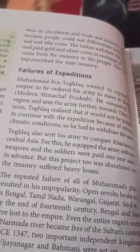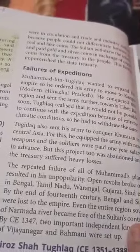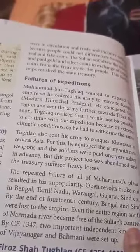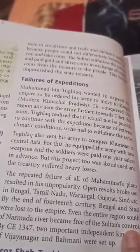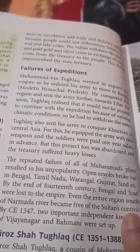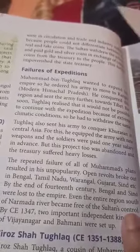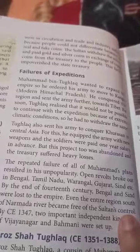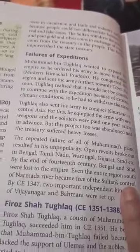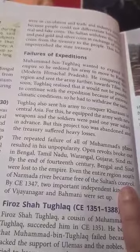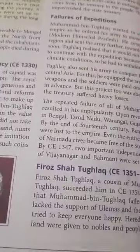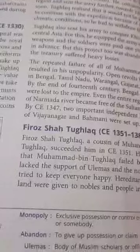Then came the failures of expeditions. He wanted to expand his empire, and in order to maintain a larger army, he started giving soldiers their salary in advance. He sent his army to conquer parts of Central Asia, equipping them with new weapons and paying one year's salary in advance. But the repeated failures of all Muhammad's plans resulted in his unpopularity. These were some of the reforms and decisions taken by him which failed.